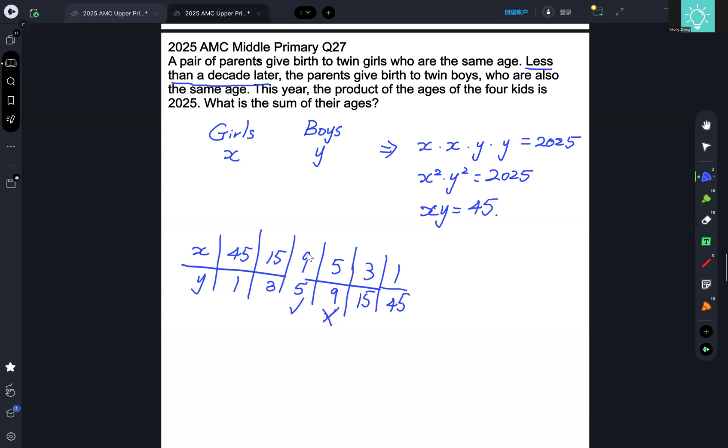That means the girls are 9 years old and the boys are 5 years old. So then the sum we want is just 9 plus 9 plus 5 plus 5, which gives us 28 as our final answer. The sum of the ages of the four kids now is 28, and we are done.